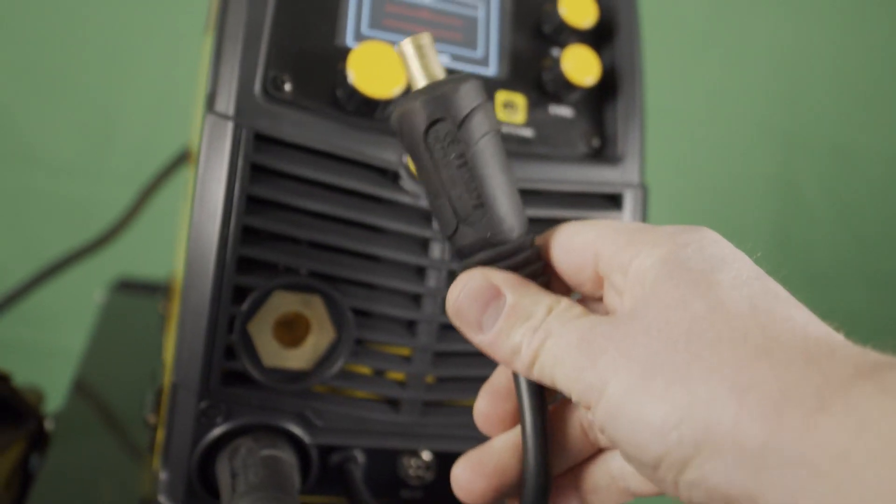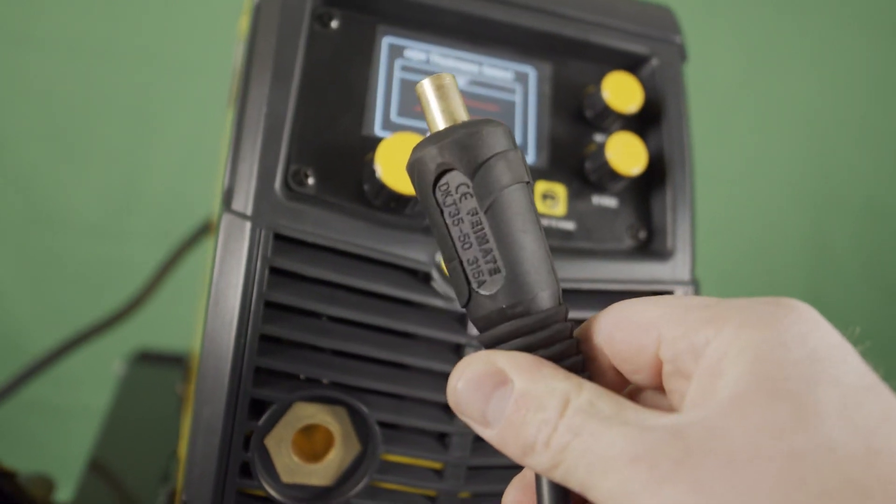Because we're setting up for stick welding we won't need the dongle that feeds the wire feeder at this time. You can let that hang free. There's no electrical charge to it so you don't have to worry.